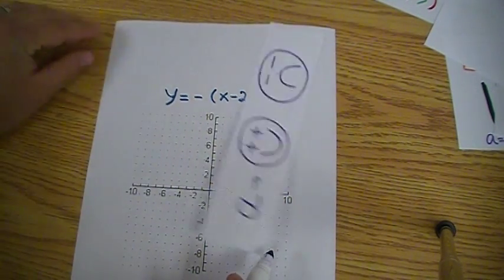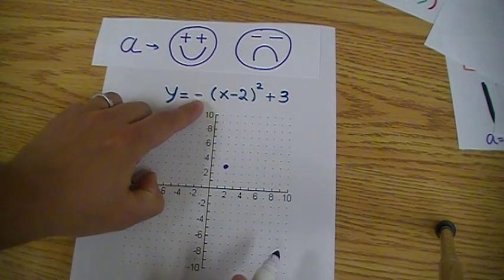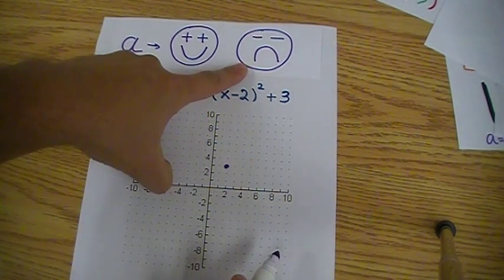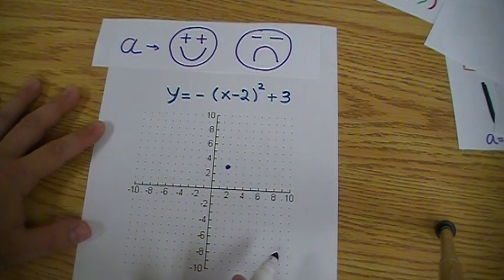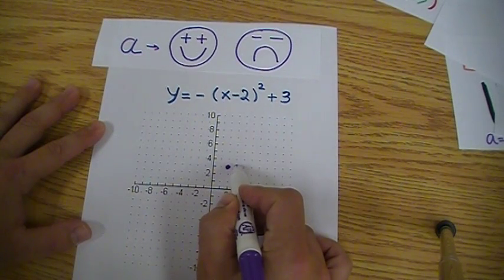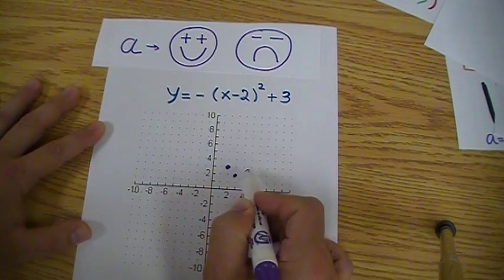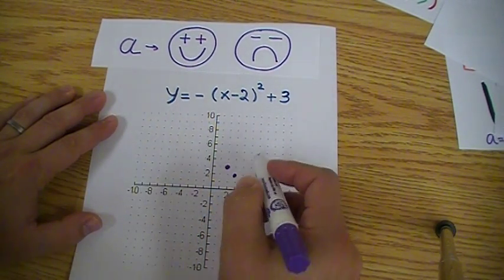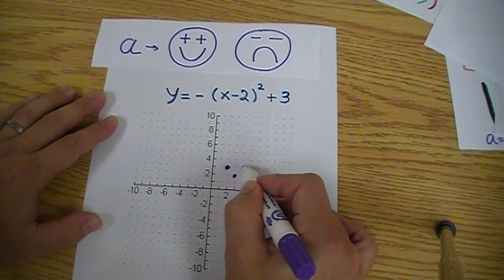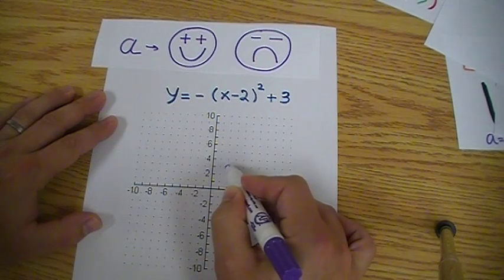What else do we find? We find that the a value is 1, or negative 1, so it means it's going to open down. It's going to be the same shape. We're going to do exactly the same thing that we did on the previous one, but going down. So I'm going to go over by 1, and 1 squared is 1, I'm going to go 1 down. Why down? Because there's a minus here. 2 over, and that's 2 squared is 4, so I'm going to go 4 down: 1, 2, 3, and 4.